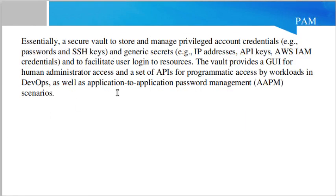PAM essentially acts as a secure vault to store and manage privileged account credentials — for example, passwords, SSH keys, generic secrets, IP addresses, API keys, and AWS credentials — and to facilitate user login to resources. The vault provides a GUI for human administrative access and a set of APIs for programmatic access by workloads in DevOps, as well as application-to-application password management.